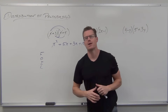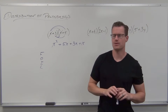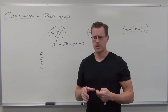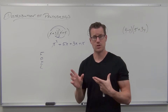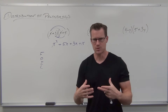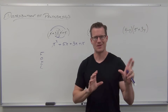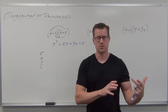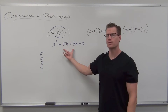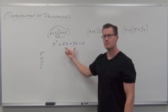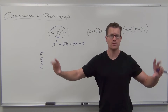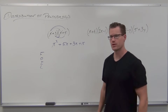Something interesting happens when you multiply polynomials times polynomials that's different from multiplying a single monomial — oftentimes you'll get like terms. And we already know about like terms. Most of the time your like terms will happen right in the middle two terms.